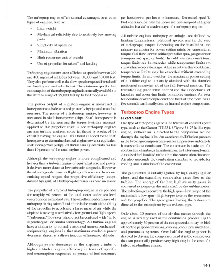The turboprop engine offers several advantages: lightweight, mechanical reliability due to relatively few moving parts, simplicity of operation, minimum vibration, high power per unit of weight, and use of the propeller for takeoff and landing. Turboprop engines are most efficient at speeds between 250 and 400 mph and altitudes between 18,000 and 30,000 feet. They also perform well at the slow speeds required for takeoff and landing and are fuel efficient. Minimum specific fuel consumption is normally available in the altitude range of 25,000 feet up to the tropopause.